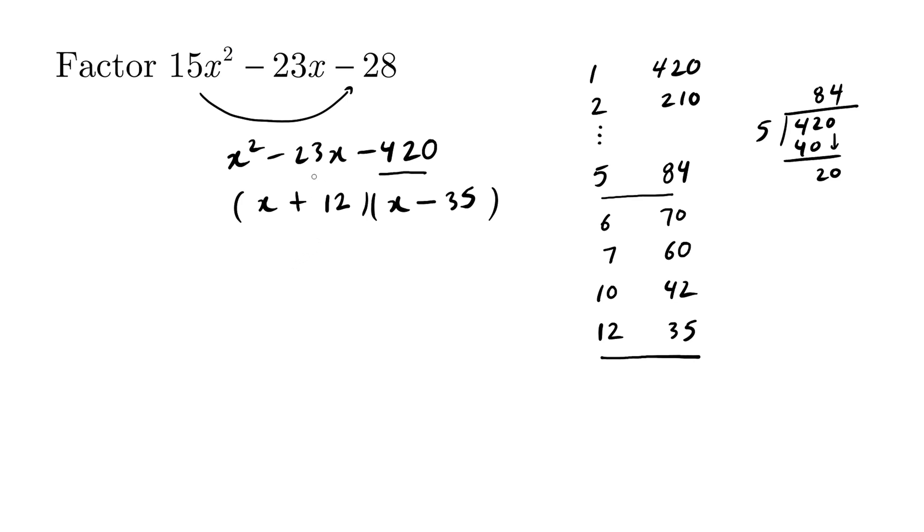So there we have it. We finally factored this trinomial but we're not done yet. We need to divide by this coefficient, 15. This is your jersey number. Before we can be promoted, we have to simplify.